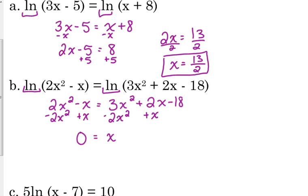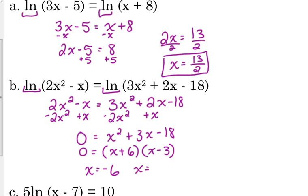0 is equal to x squared plus 3x minus 18. Factor: x plus 6 times x minus 3. So that says x equals negative 6 and x equals positive 3.